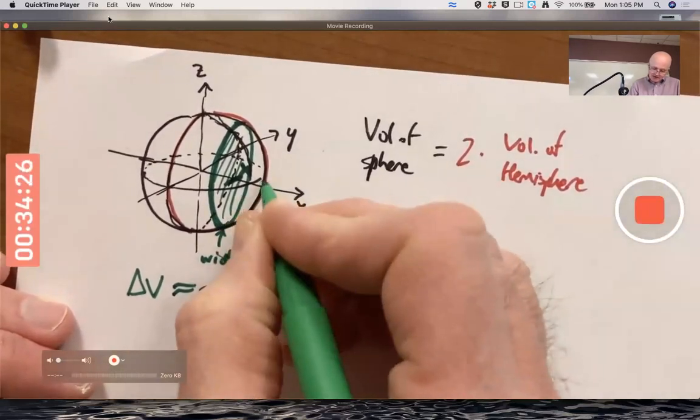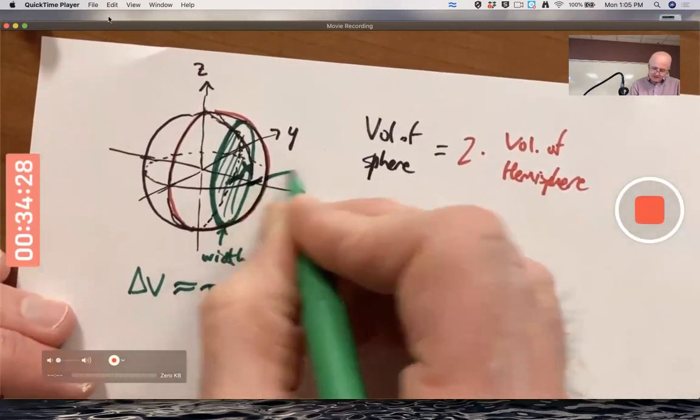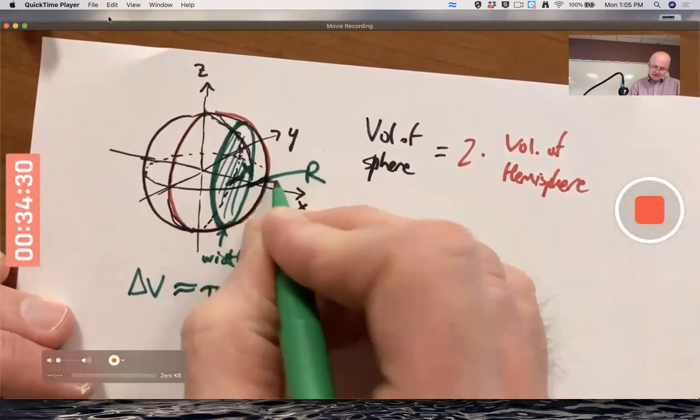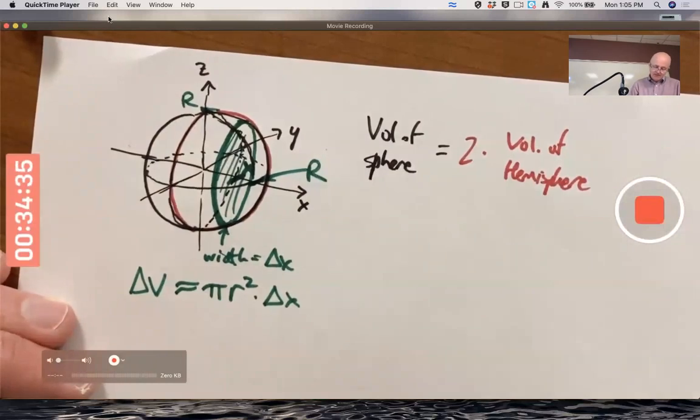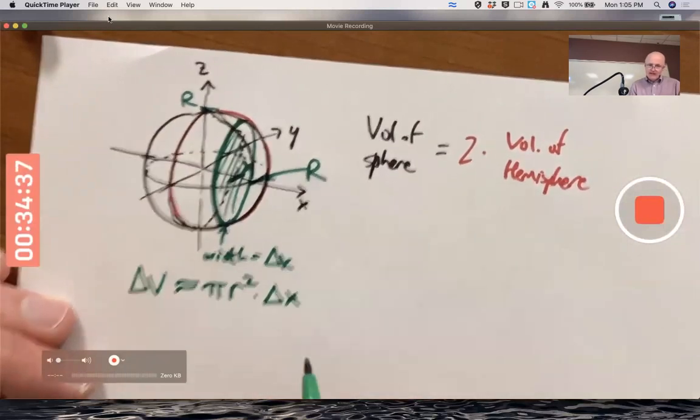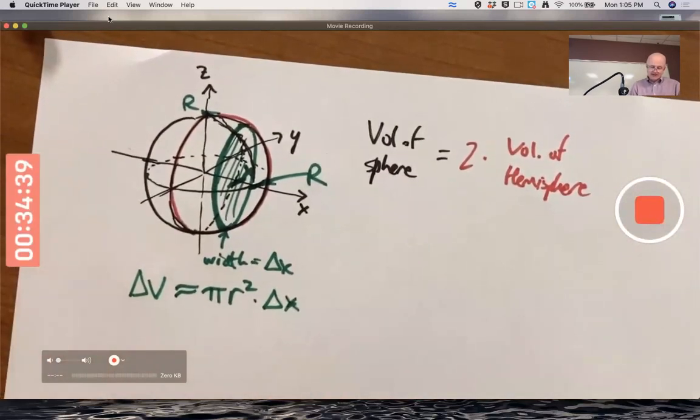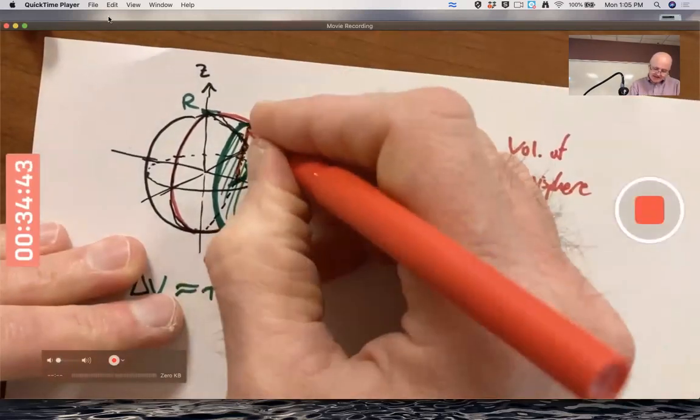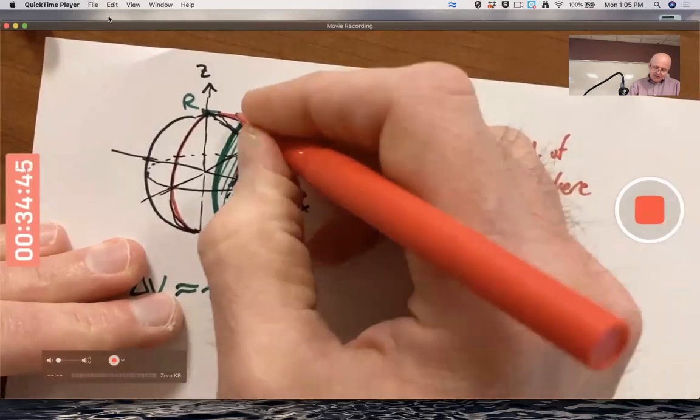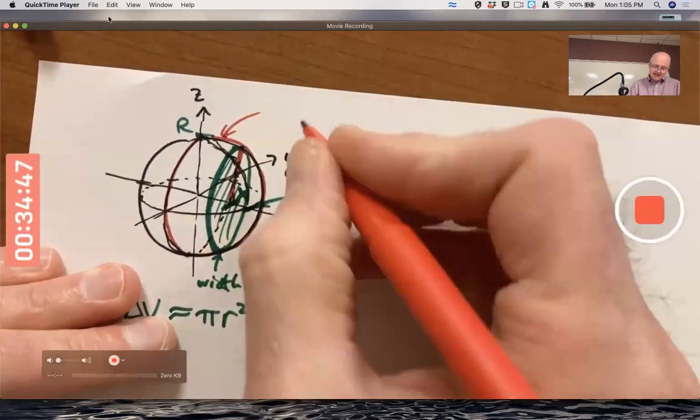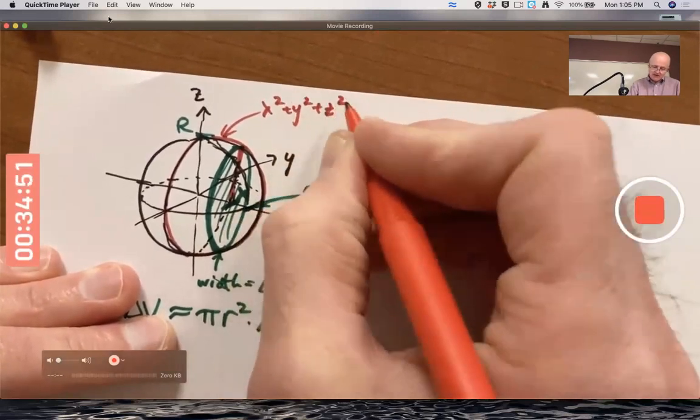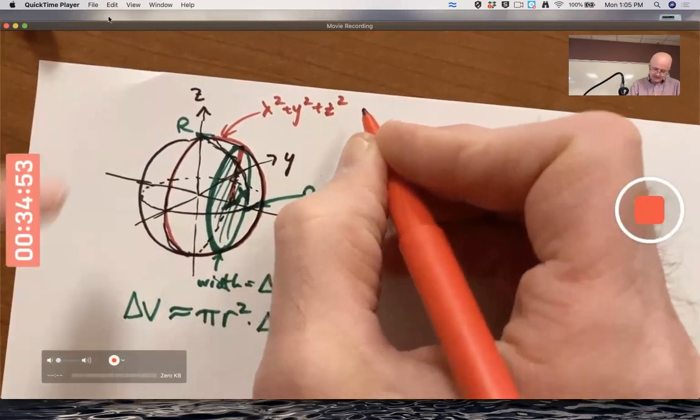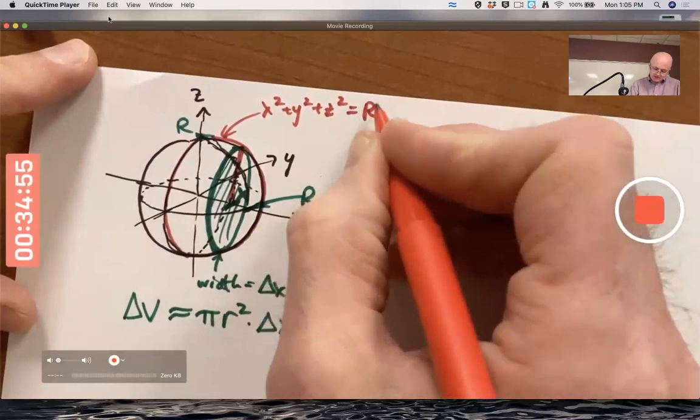See a Δx in here. You've got to get everything in terms of x. I've got to figure out how the radius of this thin disk depends on x. The equation of a sphere is x² + y² + z². If it's centered at the origin and has a radius capital R, equals R².